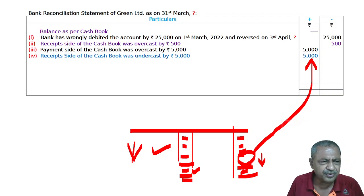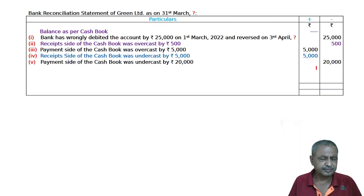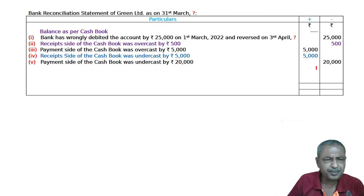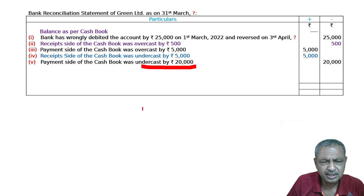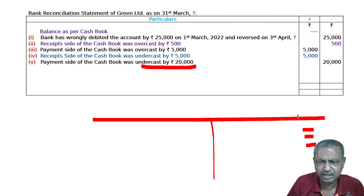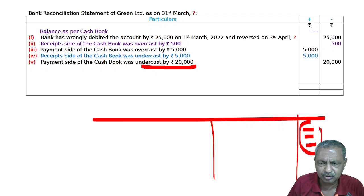Fifth: the payment side of the cash book was undercast by 20,000. The cashbook's payment side totaling is less than it should be — it is undercasting. If the payment side total is less, then less is being deducted, so the cashbook balance will be more than it should be.